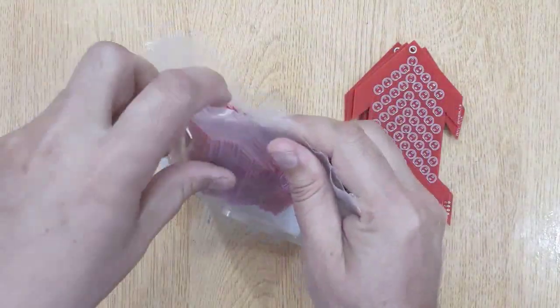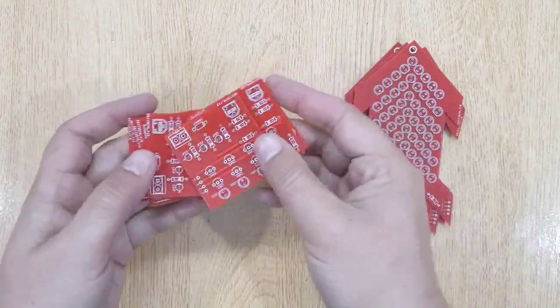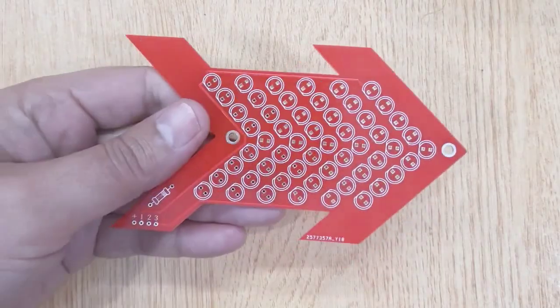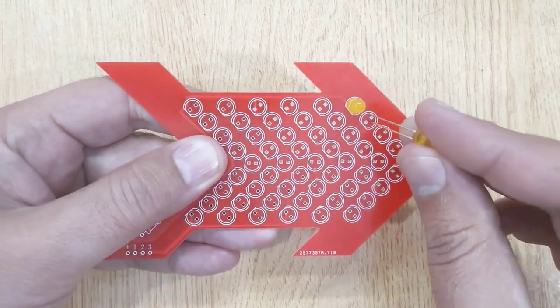If you are also interested to order PCBs like these, I will show you the complete ordering procedure at the end of this video. To make LED Arrow, insert all the yellow LEDs into the PCB one by one.